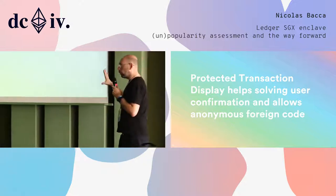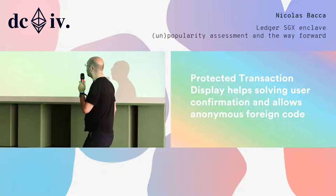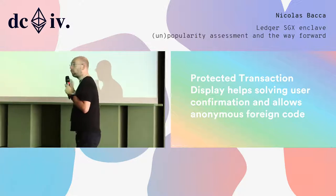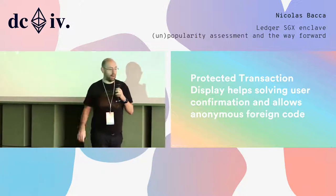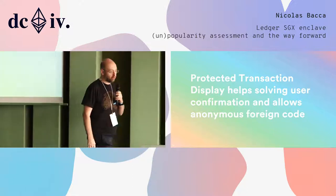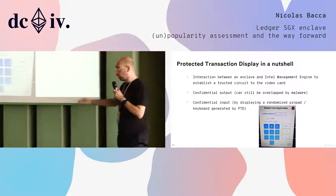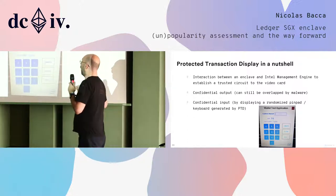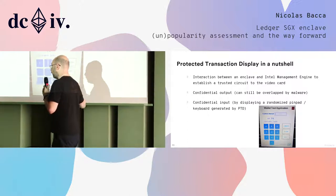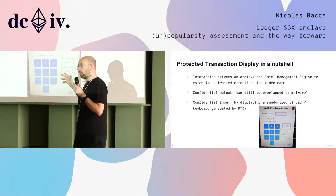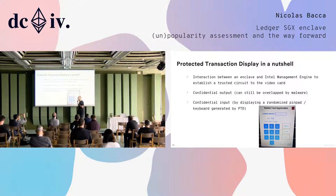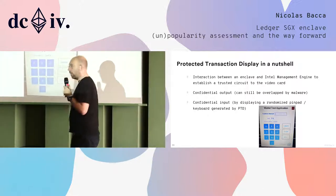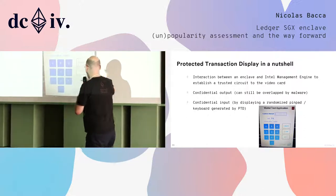The good news is that with a new Intel API called Protected Transaction Display (PTD), we can solve two problems. We can solve the confirmation issue, and we can solve the fact that you couldn't run anonymous code so far. You won't have to contact us to run your code on the enclave once this is released. To give a quick overview: PTD will be a way to create a secure display — to display something securely on your own device that is prepared by the enclave.